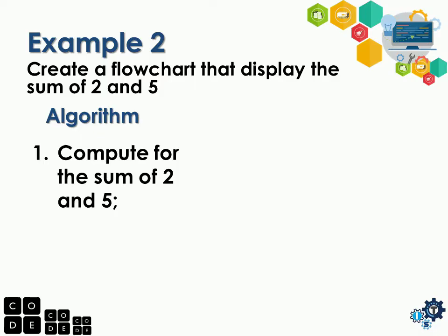The equation is: sum is equal to 2 plus 5. After computing the sum, of course we're going to print it. So that is the algorithm. Now let's try to have the flowchart.